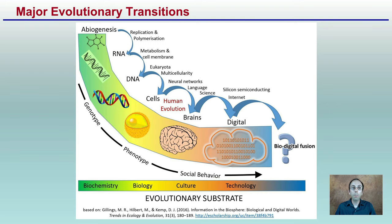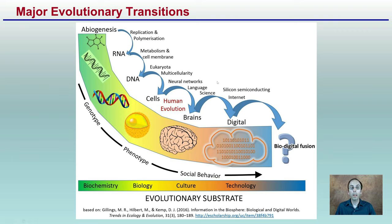Looking at major evolutionary transitions, we've seen this progression over time — from cells to human evolution and increasing brain size. We're also now moving into the digital and potential bio-digital fusion, where we're looking at independent technology that can work on its own and almost behave like a brain. This raises the question of where we are going from here.